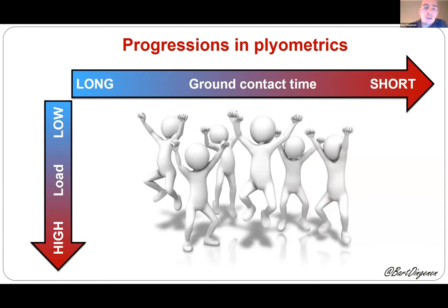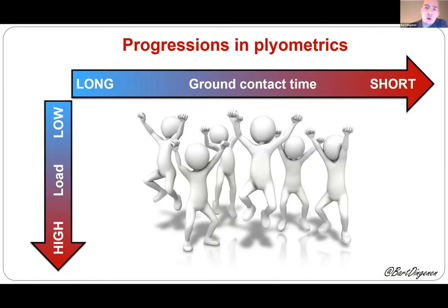One important intervention here is plyometrics. The problem is that we often instruct patients to land very softly and take a lot of time on the ground. But when you want to return to performance, what we need is very short contact times and high forces to be able to sprint and change direction. We should implement high loads and short contact times in training step-by-step — not all at once, but progressively working towards that goal.